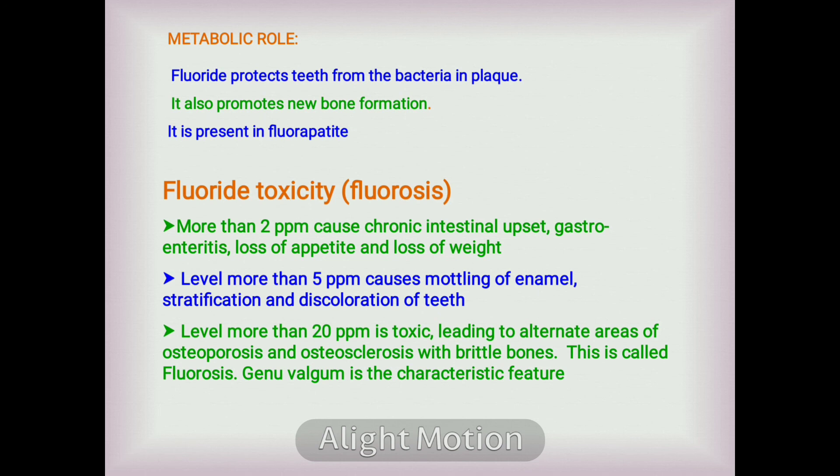The preventive measures against fluorosis are restriction of sorghum intake, taking fluoride-free water, supplementation of vitamin C, and regulated use of fluoride-containing toothpaste.